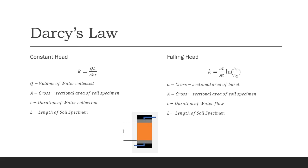In the equations for calculating the hydraulic conductivity, L is the height of the soil specimen. To measure the cross-sectional area of the specimen, we measure the outer diameter of the permeameter cell and subtract the length by 2 times the thickness of the cell walls.